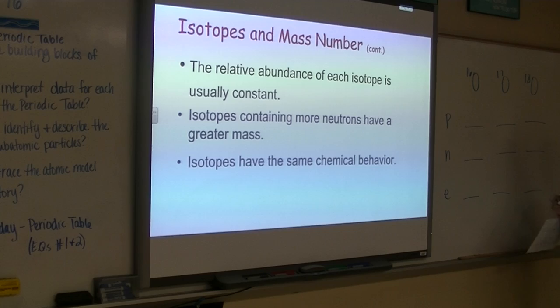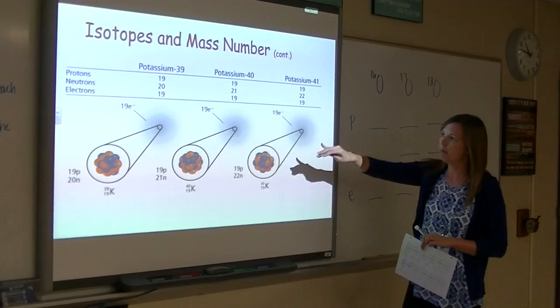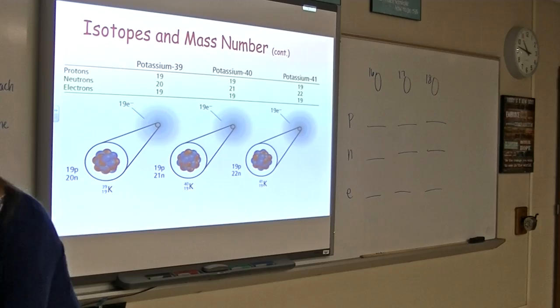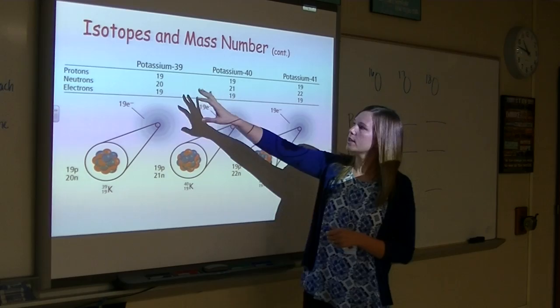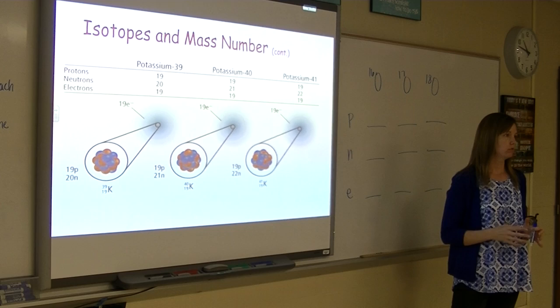Okay, so this example is potassium. So potassium has three main isotopes as well. Potassium-39 is the one that's on the periodic table. So when you look at atomic mass for potassium, you're going to see 39 on the periodic table, but there are two other isotopes. So notice across here that 19 stays the same for the protons on all three and the electrons. 19 is the atomic number of potassium. The atomic number does not change.